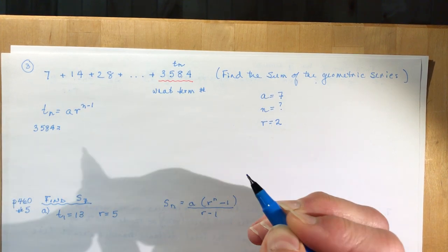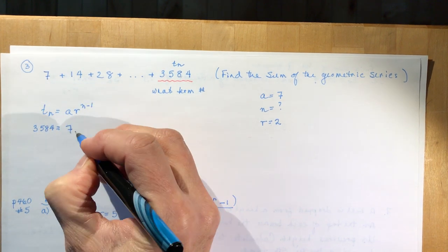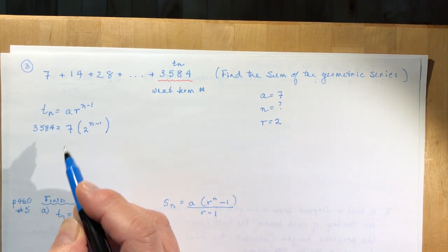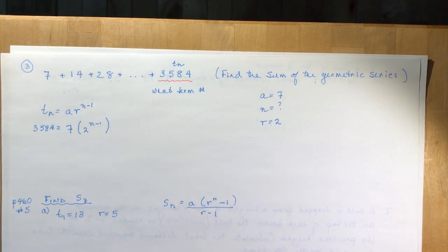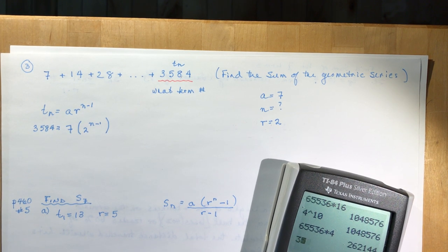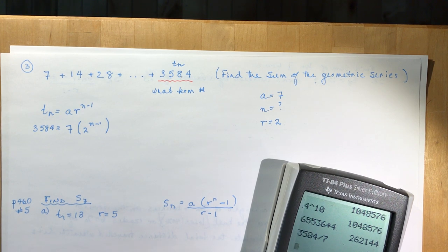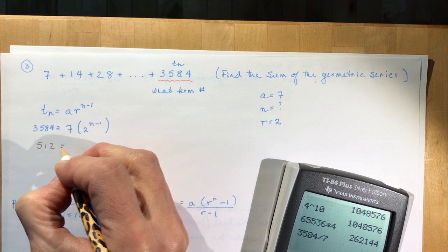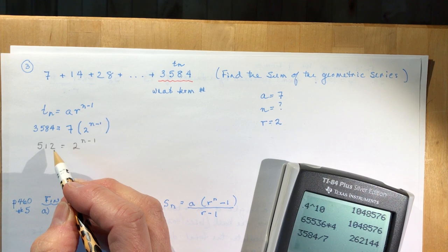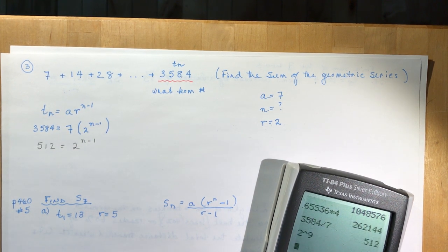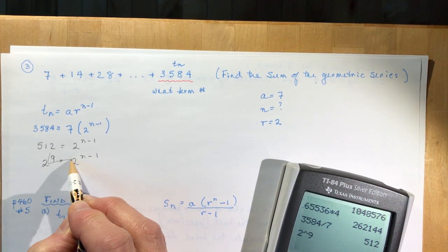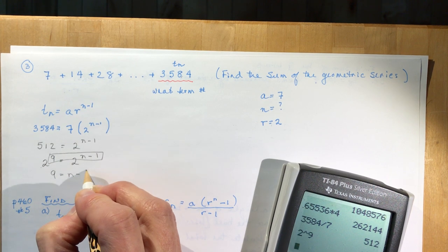So tn is 3584 equals 7 times 2 to the power of n minus 1. I divide both sides by 7: 3584 divided by 7 gives me 512. So 512 equals 2 to the power of n minus 1. Do you know what power gives 512? It's 2 to the power of 9. So 2 to the 9 equals 2 to the n minus 1 — the bases are the same, so I can equate the exponents: 9 equals n minus 1, therefore n equals 10.